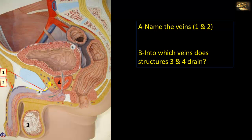Number 2 is the superficial dorsal vein of the penis, which is located in the superficial fascia. It is not accompanied by arteries and functions like a cutaneous superficial vein, so it drains into the great saphenous vein.